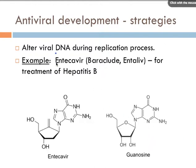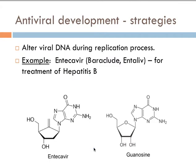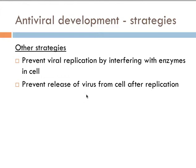Another strategy is to alter the viral DNA during the replication process. There are different drugs for this; the example used is for hepatitis B. It is basically called a nucleoside, and viral DNA just doesn't work properly anymore once it has interacted with these medications. The other last strategy is to prevent viral replication by interfering with enzymes in the cell, which prevents the release of the virus from the cell after it has replicated.